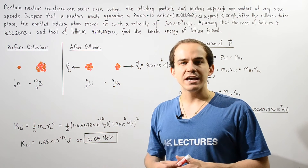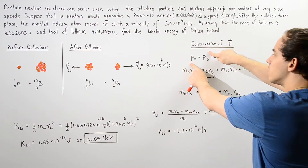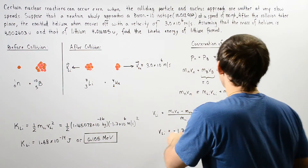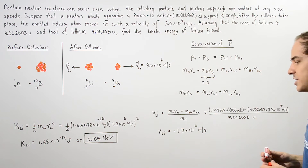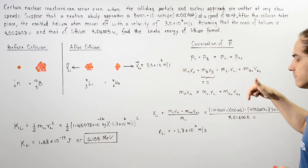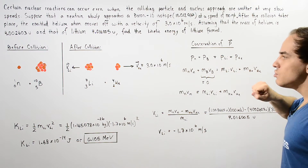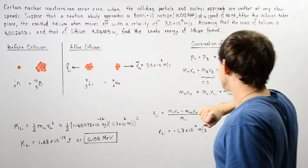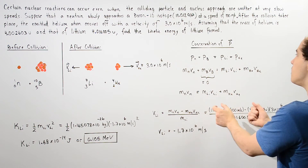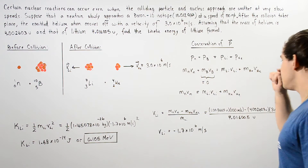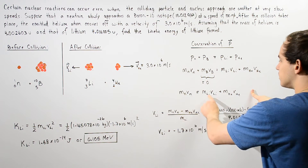Let's begin by applying the conservation of linear momentum. In any nuclear reaction, linear momentum is conserved. The sum of the momentum of our two objects before the collision equals the sum of the linear momentum of our two objects after the collision. By definition, linear momentum equals the product of mass and velocity. Since boron is stationary, its momentum is zero, and the momentum of our neutron equals the sum of the momenta of the helium and lithium products. To find the velocity of lithium, we solve for it in this equation.